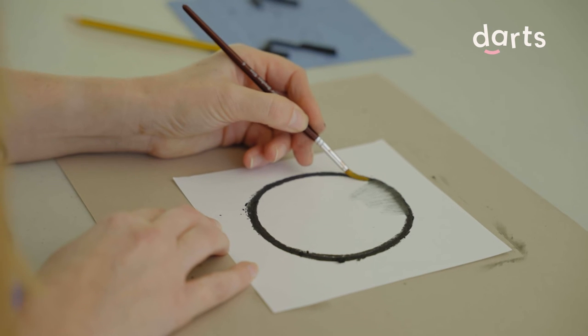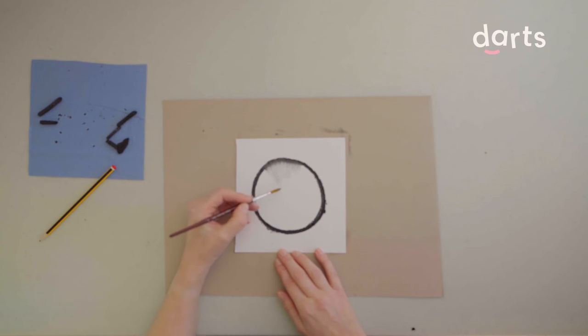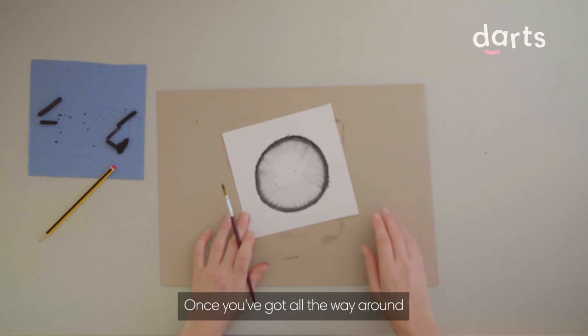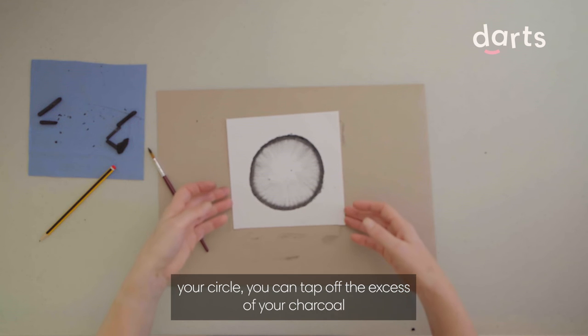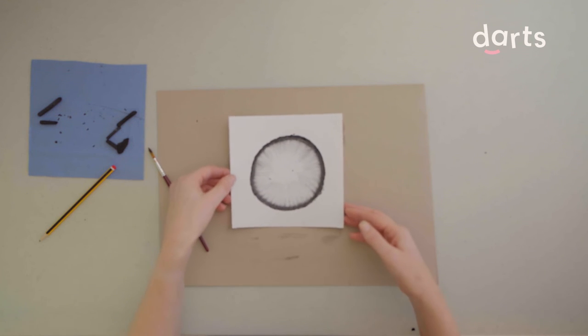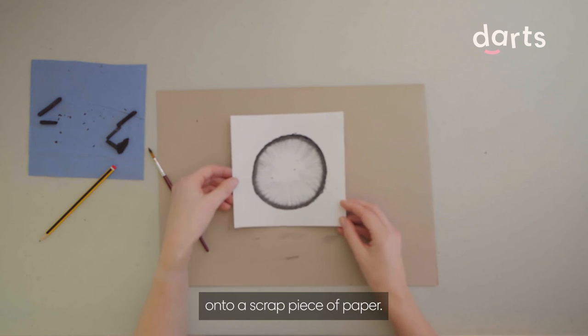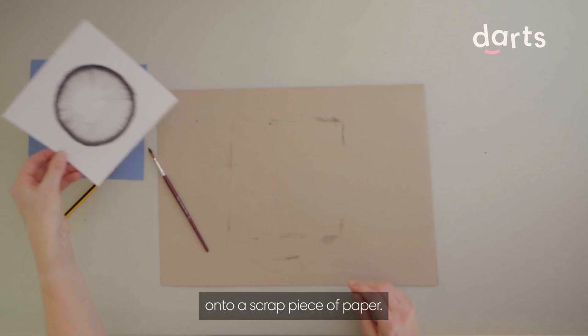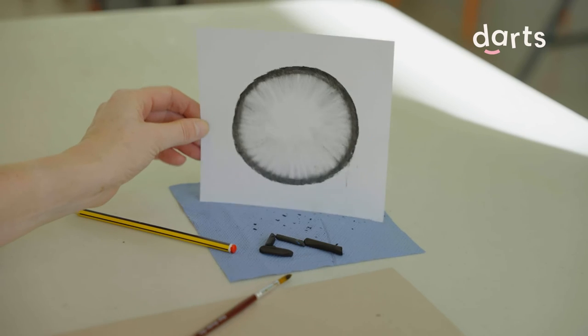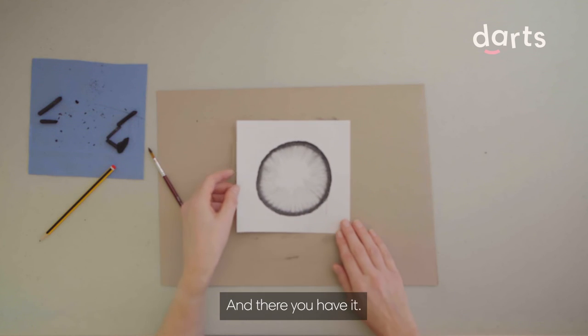Once you've got all the way around your circle, you can tap off the excess charcoal onto a scrap piece of paper. And there you have it.